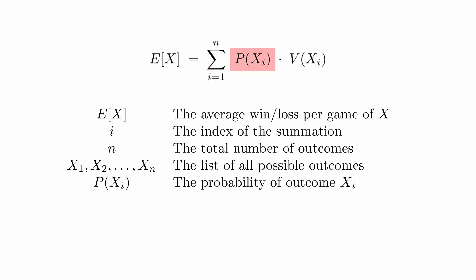Just as before, p of xi is the probability of outcome xi. V of xi is the value of the outcome xi. In our example, this is the amount of money you win or lose in outcome xi.